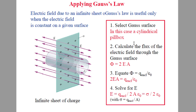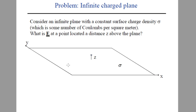Now, applying Gauss's Law — there are many applications, but in your syllabus there is one application: finding the electric field due to an infinite sheet of charge using Gauss's Law. Gauss's Law is useful only when the electric field is constant over a given surface. We have a surface here with a positive charge, producing an electric field away from that surface, and the surface is of infinite extent.